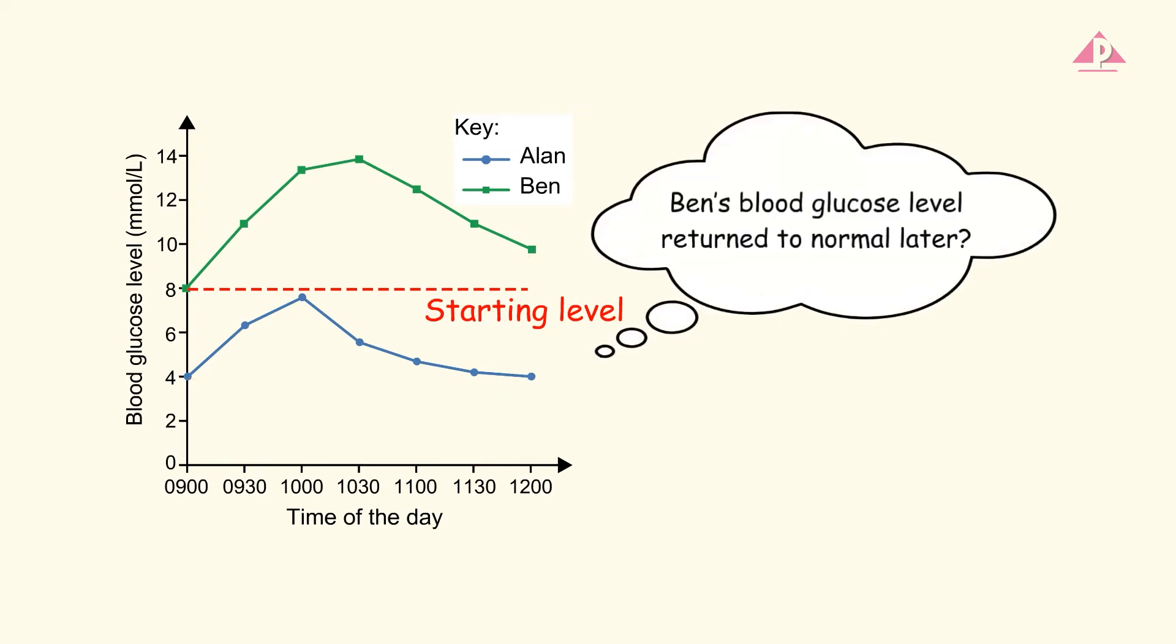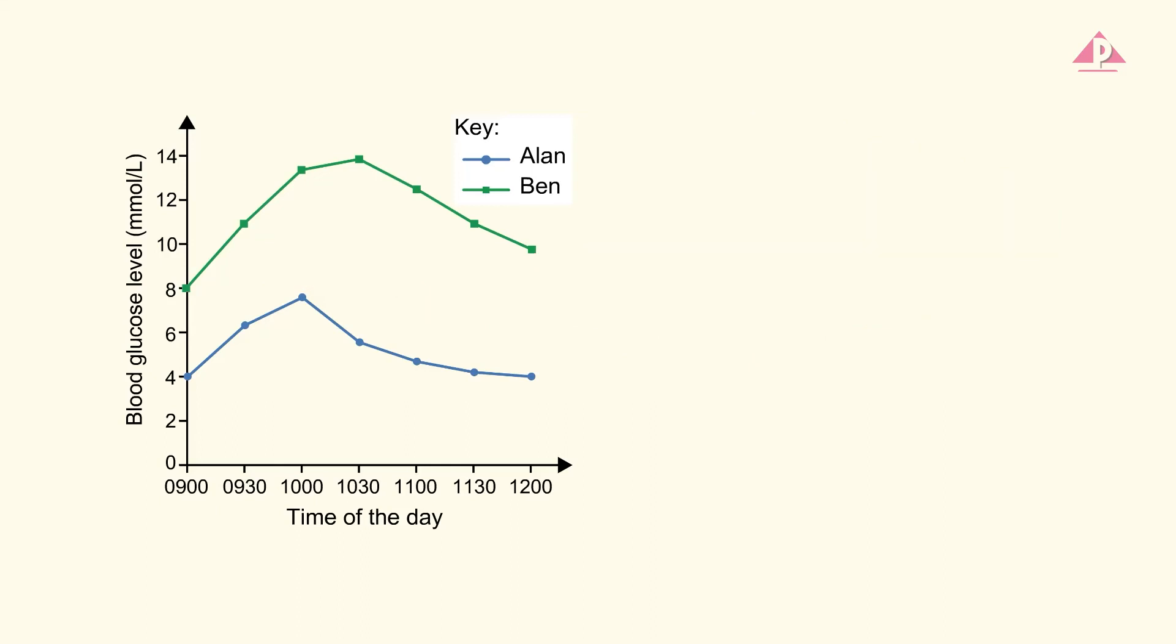Some students may answer, 'Ben's blood glucose level returned to normal later.' While this statement may be true, the graph did not show that Ben's blood glucose level returned to normal. And therefore, this is an incorrect answer.